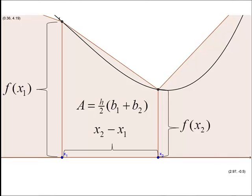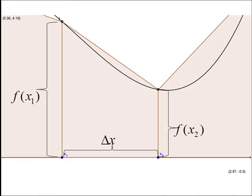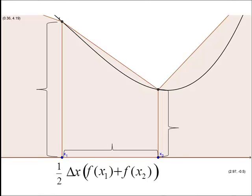Now, x2 minus x1 is the length of our interval, and you'll recall that the length of our interval is b minus a over n, which we call delta x. So this will give us the form for the trapezoid rule: one half times delta x, times f of x1 plus f of x2.